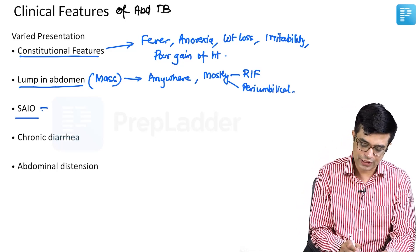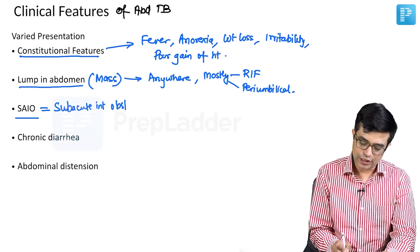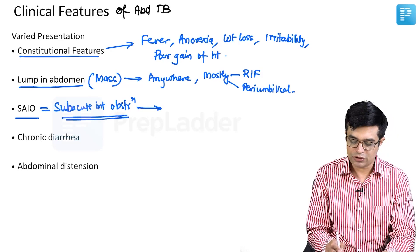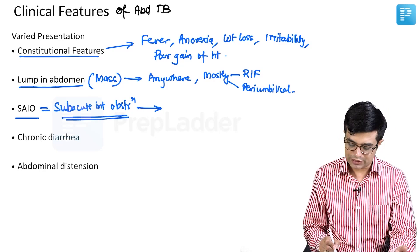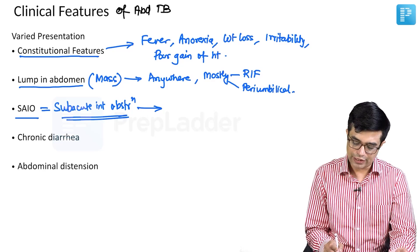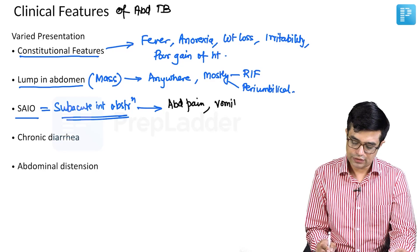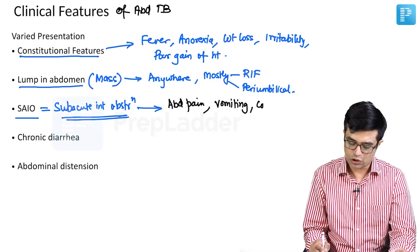Then we have SAIO — SAIO stands for subacute intestinal obstruction. Due to obstruction and adhesions, episodes of SAIO symptoms can develop. These patients will have abdominal pain, which will often be colic in nature, they will have vomiting, and even constipation can sometimes be seen.